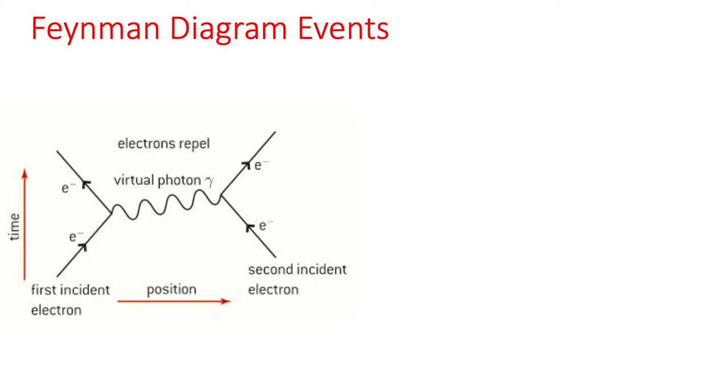We've got time on the y-axis and position on the x-axis. What you should be aware about Feynman diagrams is that the time has been turned into kind of a spatial dimension. So normally y and x would be 2D spatial dimensions. In this case, y represents time.